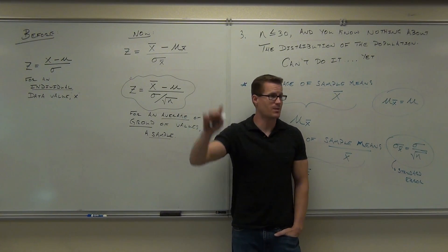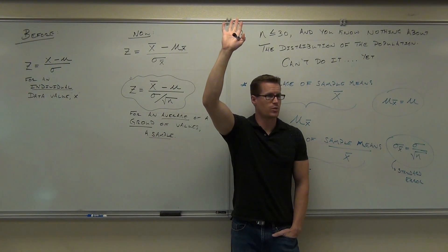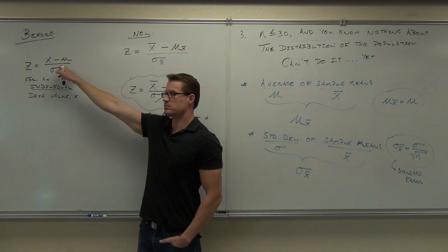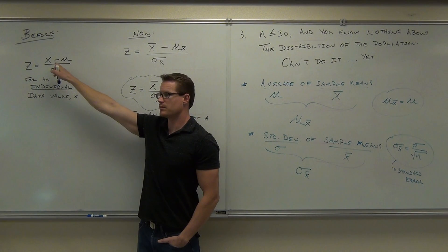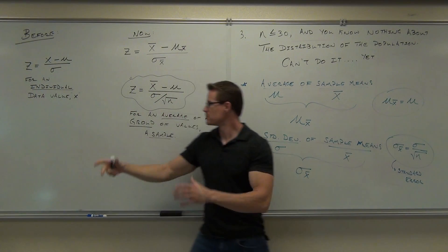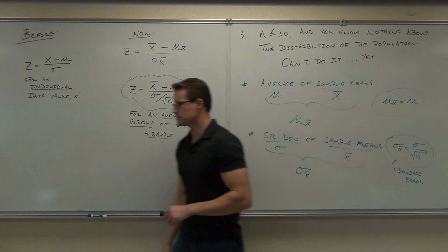So when you're dealing with a z-score of an individual, that's one formula — no problem. When you're dealing with a z-score of a group, of a mean, of a sample, that's the other formula. That's what we're talking about.